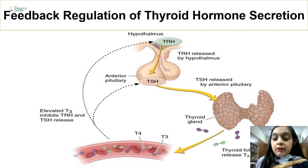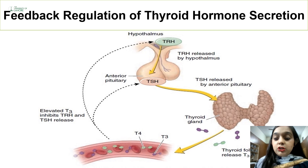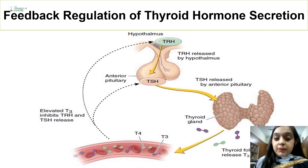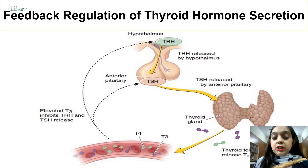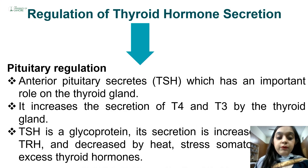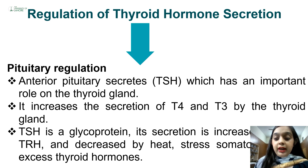In the negative feedback mechanism, when the levels of T3 and T4 rise in the blood, this leads to inhibition of TRH production from the hypothalamus, which decreases TSH production and subsequently stops production of T3 and T4, restoring the blood maintenance level. This is how the pituitary gland plays an important role in the hormonal mechanism of thyroid hormone through TSH.